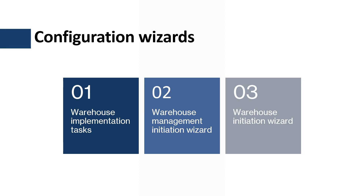The first one is the Warehouse Management Implementation Tasks Workspace, which is used to manage and define the Warehouse Management Implementation Activities. The second one is the Warehouse Management Initiation Wizard, which is used to manage and define the prerequisite configurations like the Warehouse Management parameters and the Warehouse Layout configurations.